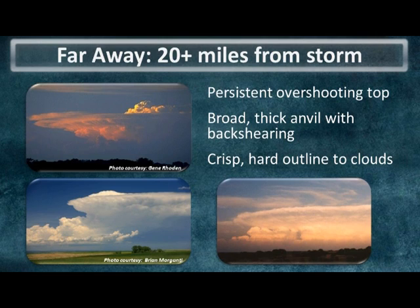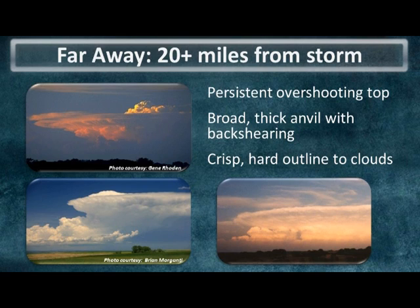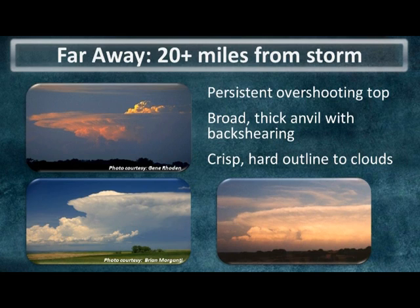From farther out, about 20 miles or more from the storm, look for a persistent overshooting top — visible in the top left image — indicating a very strong updraft. Also look for a broad, thick anvil, which is that flat almost flying-saucer-shaped feature at the top of the storm. If that anvil is growing back against the upper-level winds — likely toward the west or southwest — in what we call backshearing, we know we have a very strong updraft. Also look for crisp and hard outline edges to the clouds, as opposed to a soft and mushy appearance.